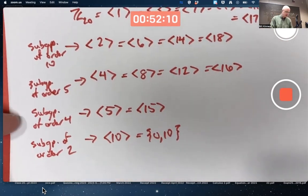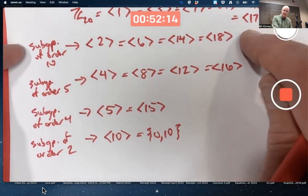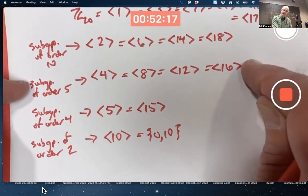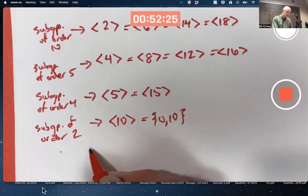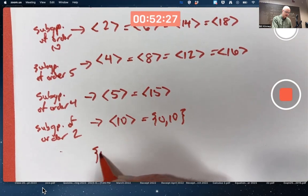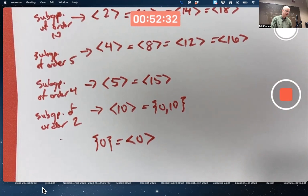2 does divide 4, so this is a subgroup of that. It also divides 10, so it's a subgroup of that. But it does not divide 5, so it's not a subgroup of this. You can list out the elements if you want to be sure. And then we got the trivial subgroup, just 0, just the identity generated by the identity.